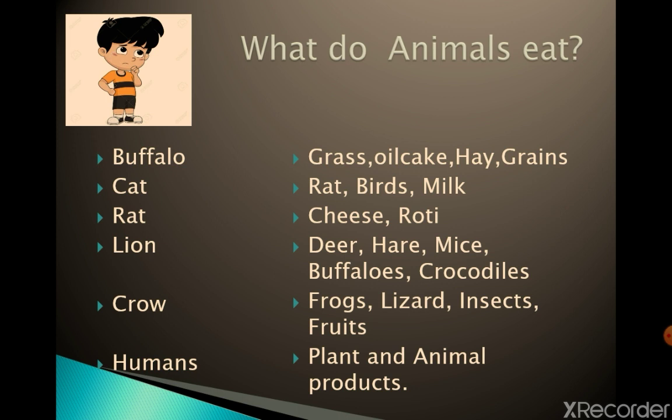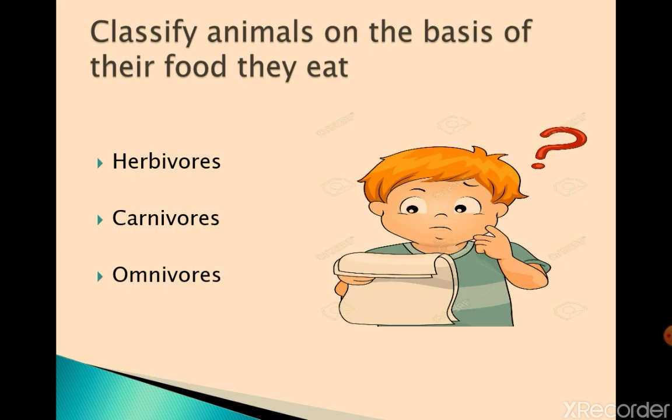Everybody knows what humans eat — plants and animal products like fruits, vegetables, milk products, egg, meat, etc. Now we classify animals on the basis of the food they eat: first, herbivores; second, carnivores; and third, omnivores.